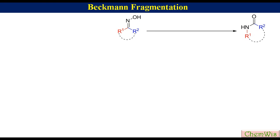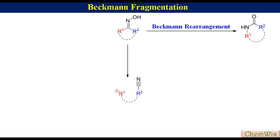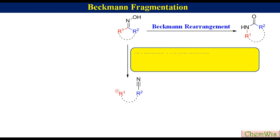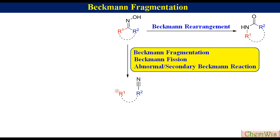This transformation is called Beckman Rearrangement. Certain oximes that are capable of generating a very stable carbocation by the cleavage of the C-C bond trans to the hydroxyl group produce nitrile and carbocation. This transformation is called Beckman Fragmentation, Beckman Fission, or Abnormal or Secondary Beckman Reaction.